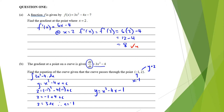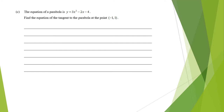That is an achieved tick. Next question: the equation of the parabola is y equals 3x squared minus 2x minus 4. We're going to find the equation of the tangent. We'll use the point-gradient formula — that's going to be the easiest way.